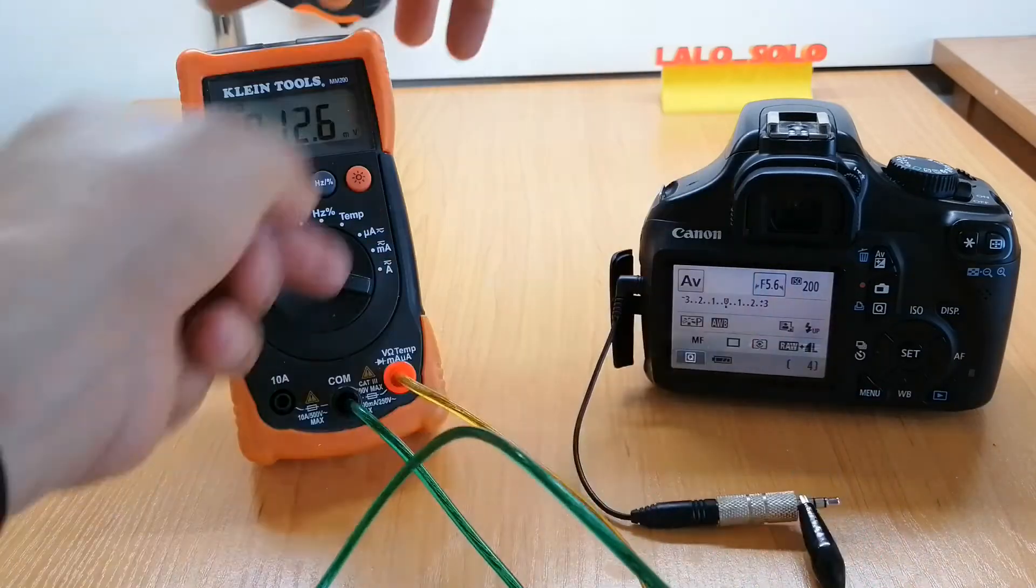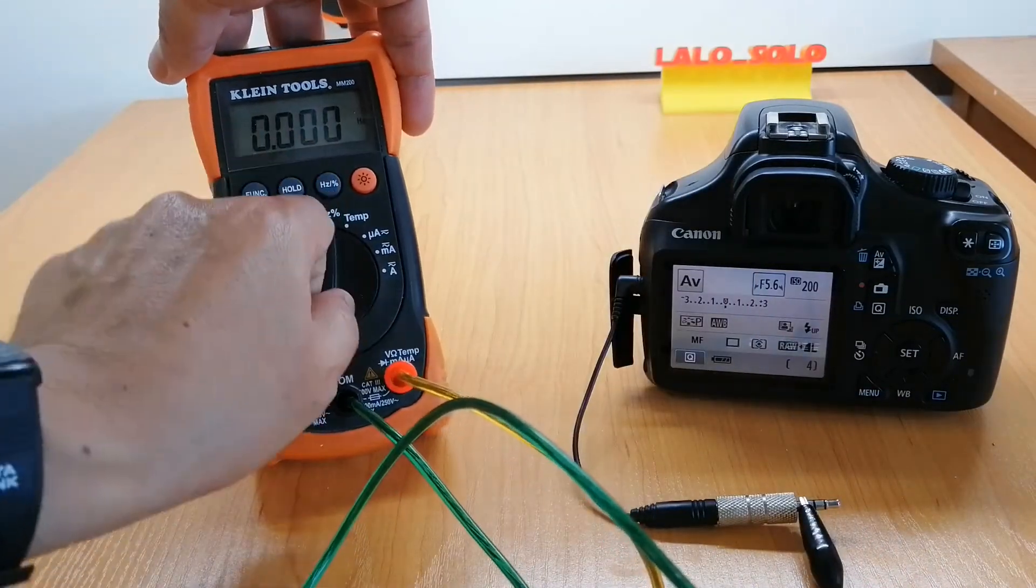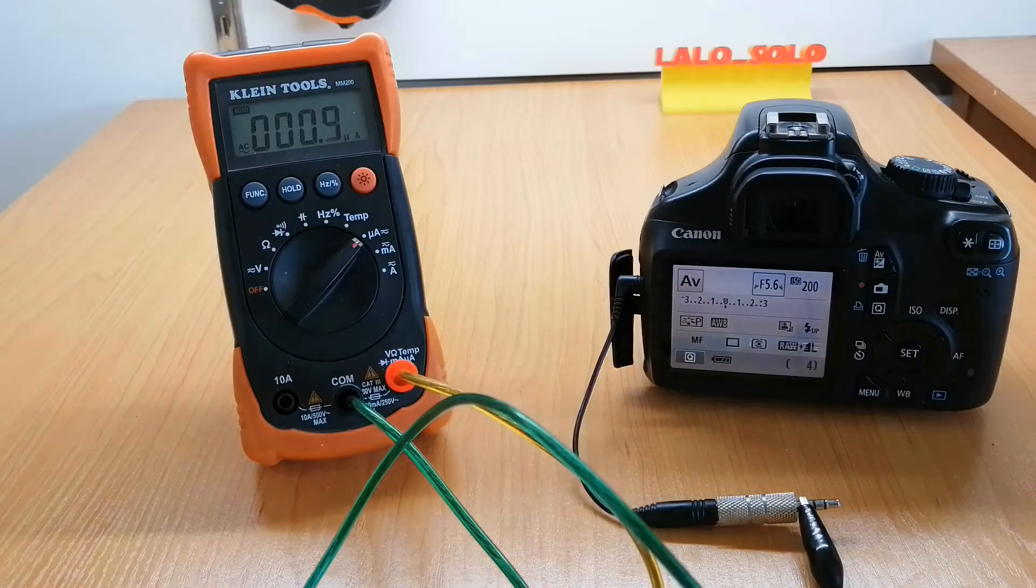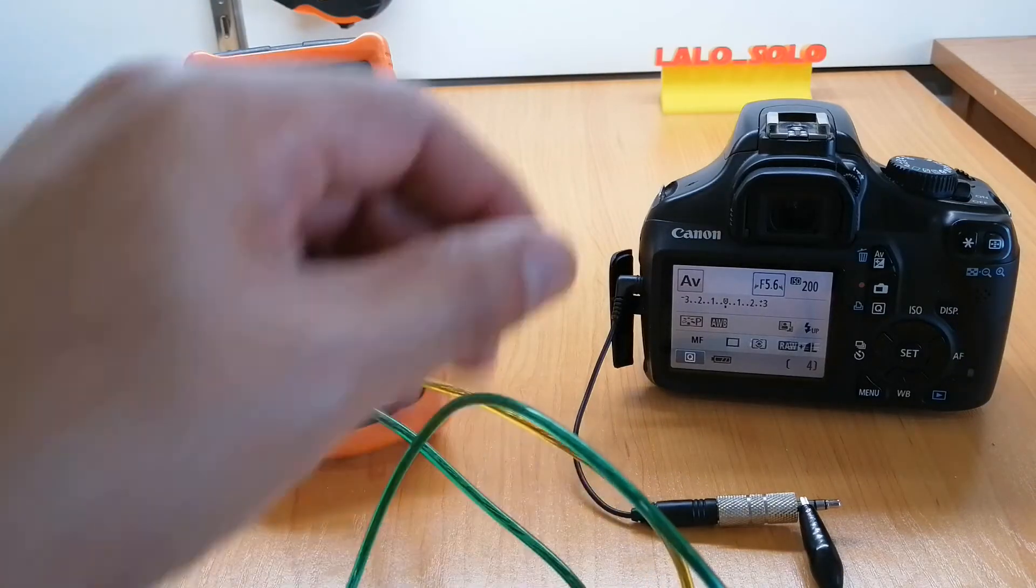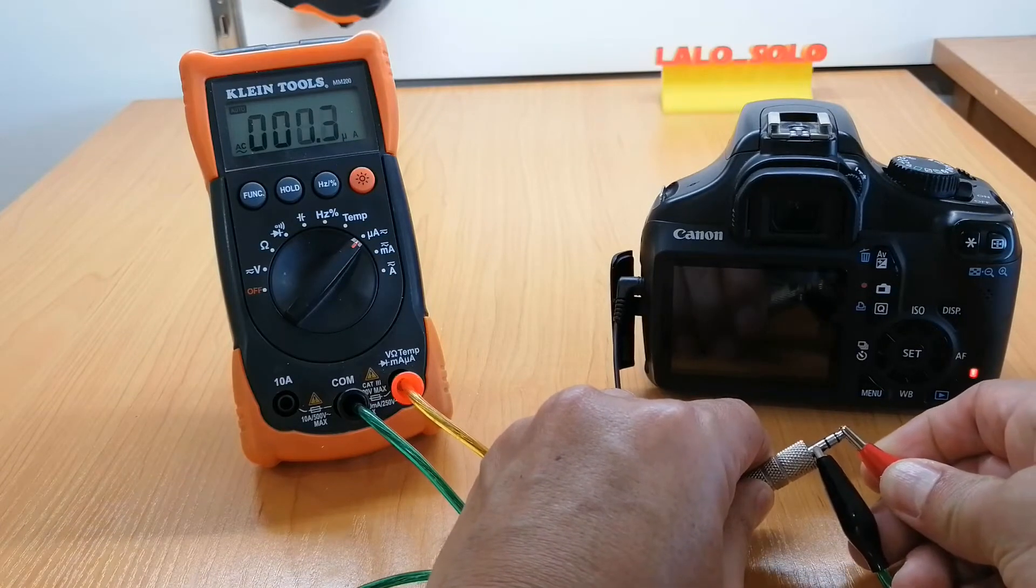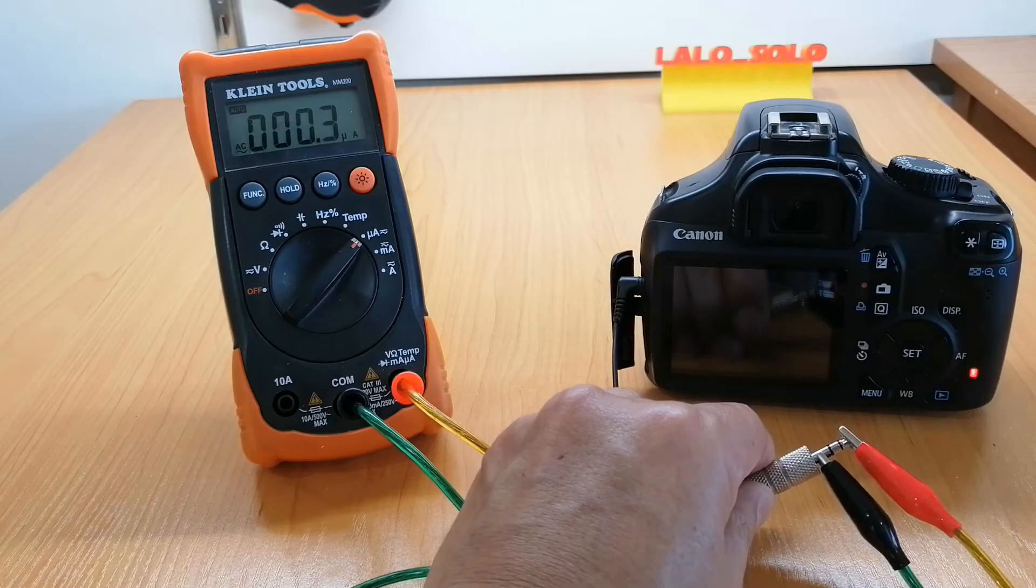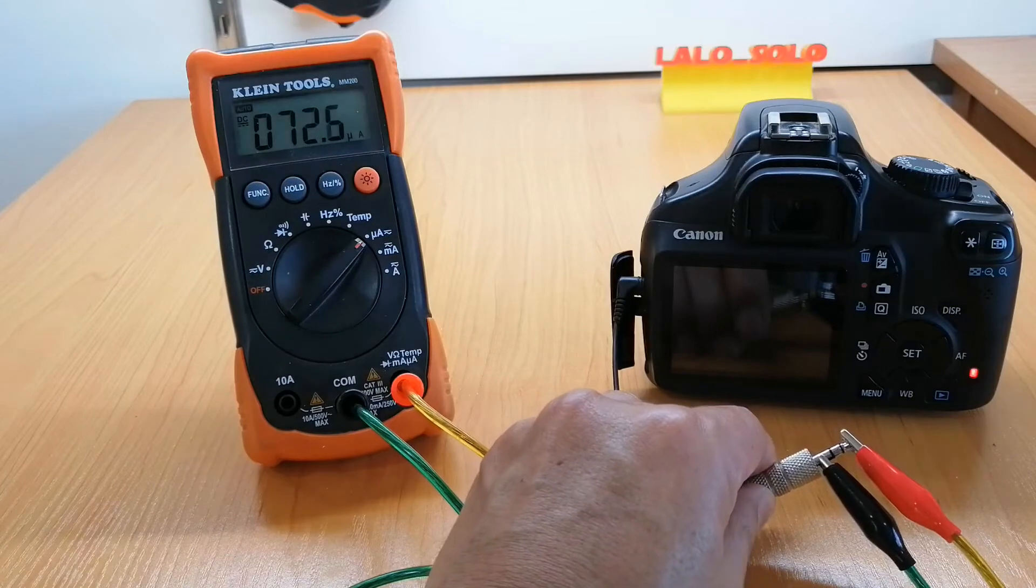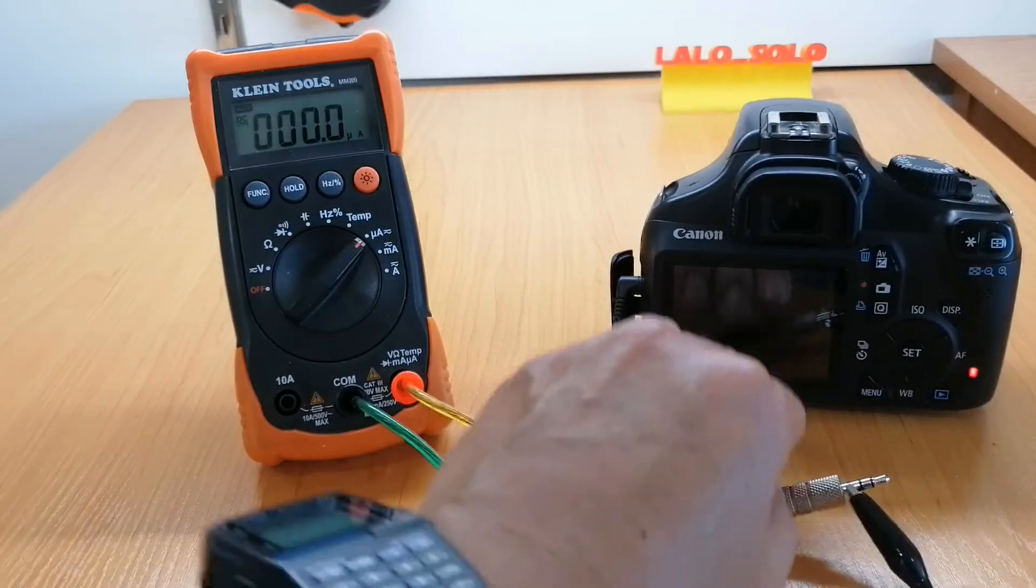Now we need to set the multimeter on microamps measurements. Measuring current short-circuits the two terminals and we are activating the shutter. This is 72 microamps of current.